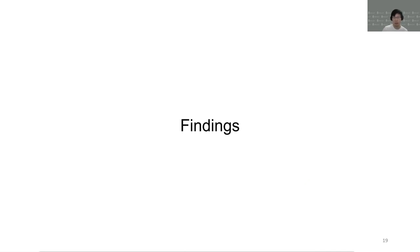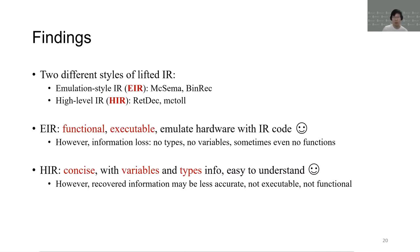Then here are the findings of this study. One of our major findings is that currently existing lifters follow two distinct patterns when producing IR code. We distinguish them as emulation-style IR, abbreviated as EIR, and high-level IR, abbreviated as HIR in the following. Generally, EIR is functional and executable, as it tries to emulate each hardware instruction peacefully with IR code. However, such IR does not contain valuable information including variables and types and even function prototypes.